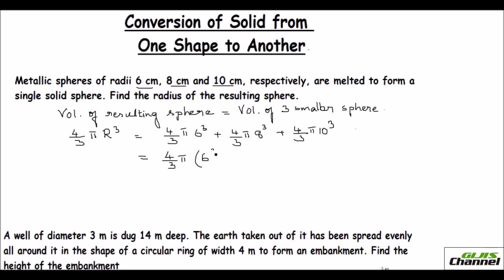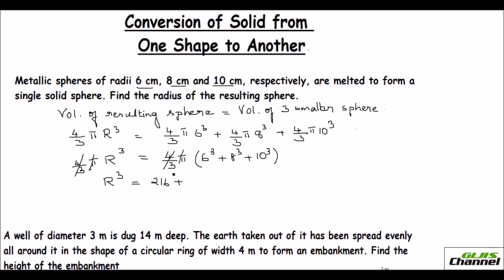So we have (4/3)πR³ = (4/3)π(6³ + 8³ + 10³). The (4/3) and π cancel on both sides, giving R³ = 6³ + 8³ + 10³. Now 6³ = 216, 8³ = 512, and 10³ = 1000.